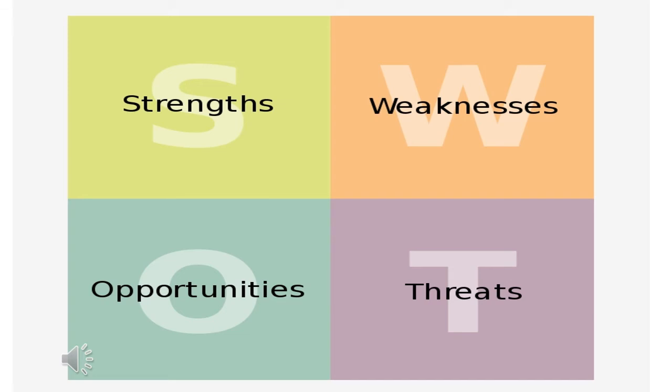In a SWOT analysis, there are four boxes: Strengths are the areas where you do well or have an advantage — for example, special expertise. It is easy to identify the critical success factors of your company here. Weaknesses are the areas that need improvement — for example, issues with managing staff. In order to overcome them, you need to conduct sessions to settle those issues and work toward closure.